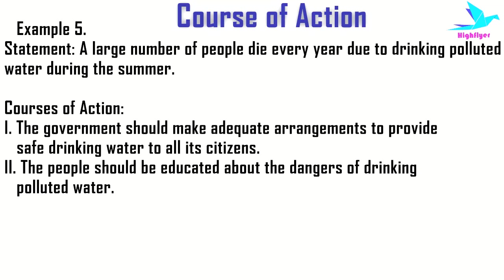Next example: the statement is — a large number of people die every year due to drinking polluted water during summer. The first course of action is: the government should make adequate arrangements to provide safe drinking water to all its citizens. The second course of action is: the people should be educated about the danger of drinking polluted water.